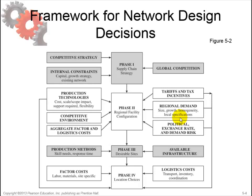After applying the gravity location models, you reach phase 4: location choices. The objective of phase 4 is to select a precise location and capacity allocation for each facility. Attention is restricted to the desirable potential sites selected in phase 3. The network is designed to maximize total profit, taking into account expected margin and demand in each market, various logistics and facility costs, and the taxes and tariffs of each location. The model used in phase 4 is network optimization models.